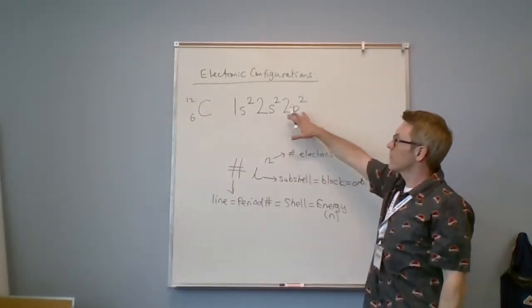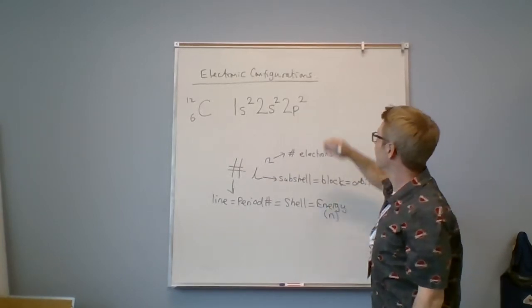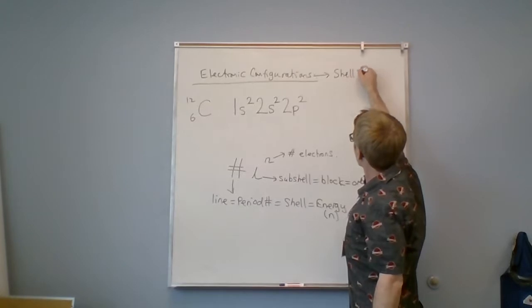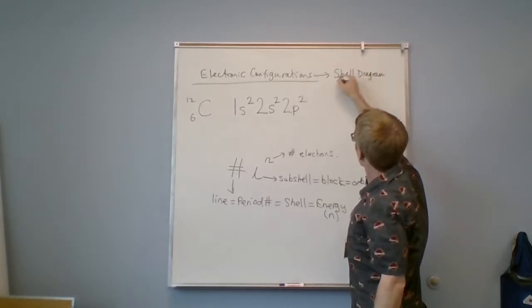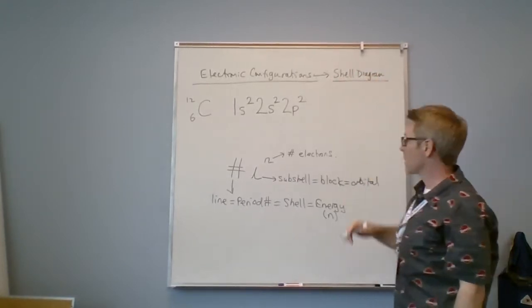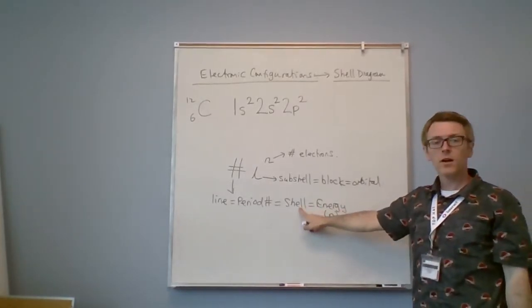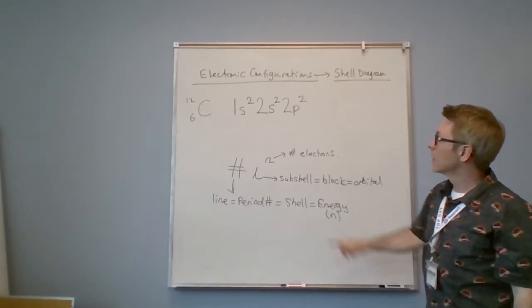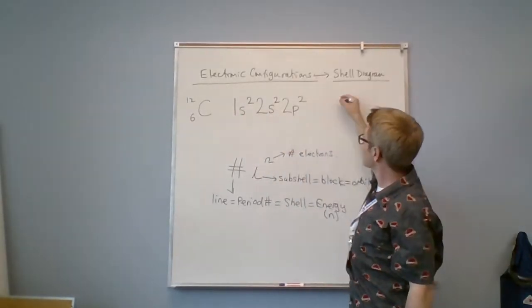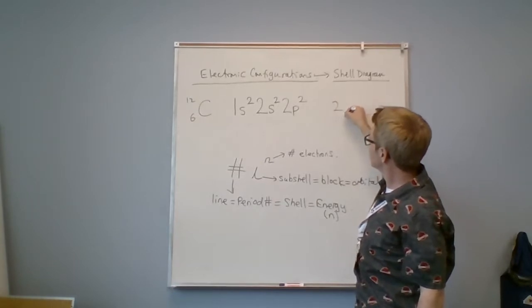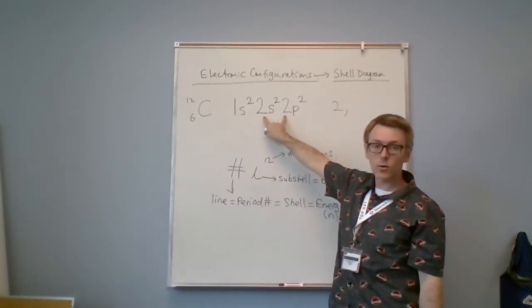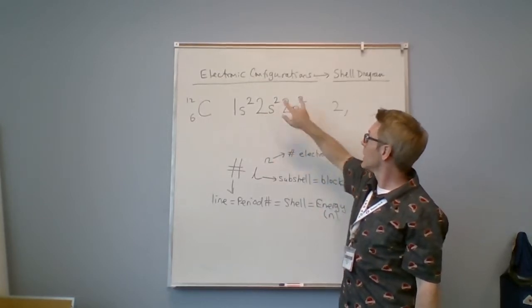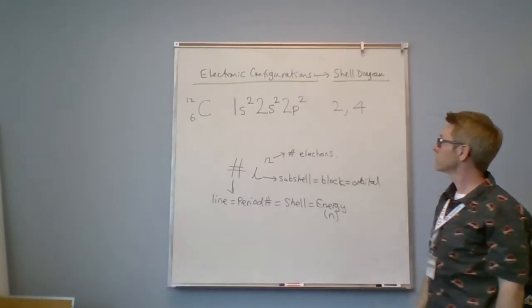If I were to convert this electronic configuration to a shell diagram, I'm looking at how many electrons are in each shell.